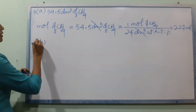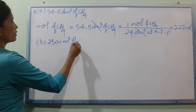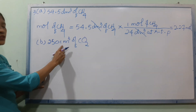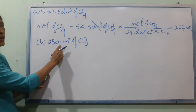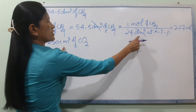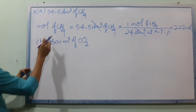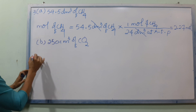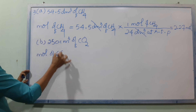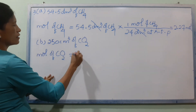Number B: 250 cm³ of CO2. To find the number of moles, we need to convert cm³ to dm³ first, then divide by the molar volume of 24 dm³ at RTP.